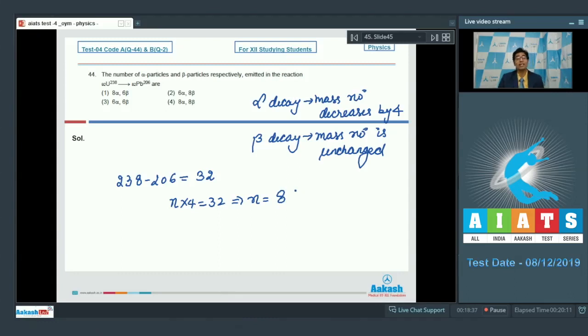Therefore, the number of alpha decays happening in this particular reaction are 8. The number of beta decays are 6, and the correct answer for this question should be option number 1.